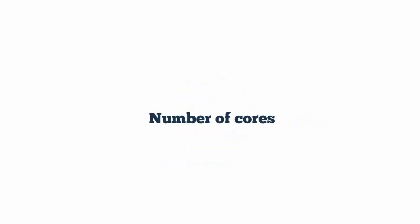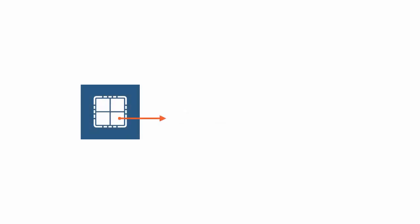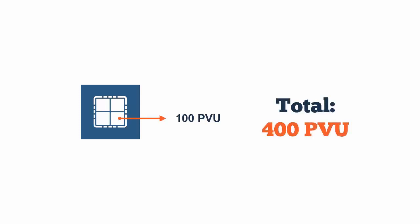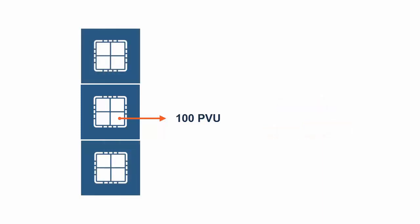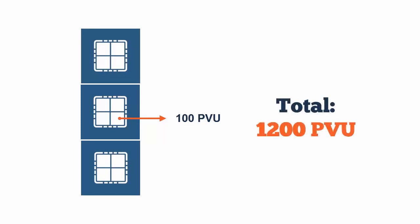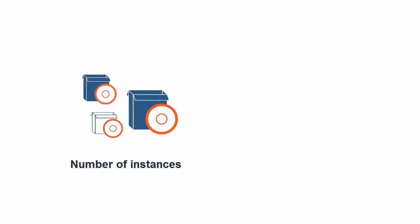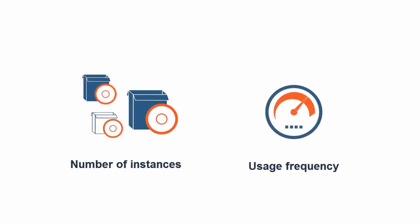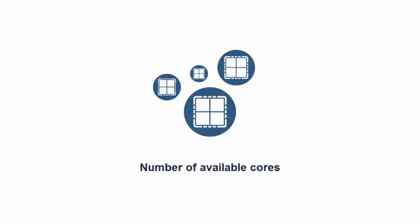The number of consumed PVUs also depends on the number of processor cores that are available to the product. For example, if the product is installed on one server with four processor cores, and the processor type requires 100 PVUs per core, 400 PVUs are required to license the product. If the same product is installed on three servers with the same processors, 1200 PVUs are required. It does not matter how many instances of the product are installed, or whether and how often the product is used. It only matters how many processor cores are available to the product in the entire infrastructure.